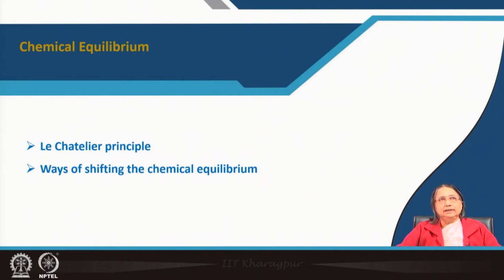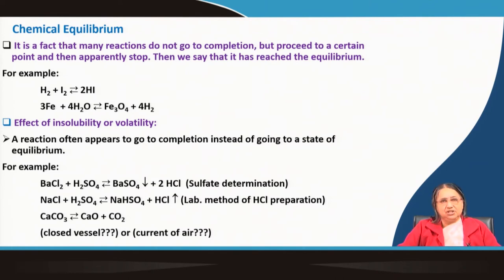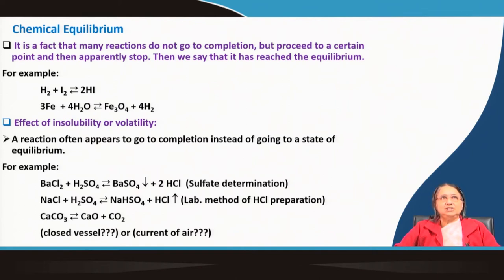I will also explain how we can drive a chemical reaction towards the forward or backward direction — that is, how we can shift the chemical equilibrium. Many reactions do not go to completion; they proceed to a certain extent and then apparently stop. At that point, we say that chemical equilibrium is reached.